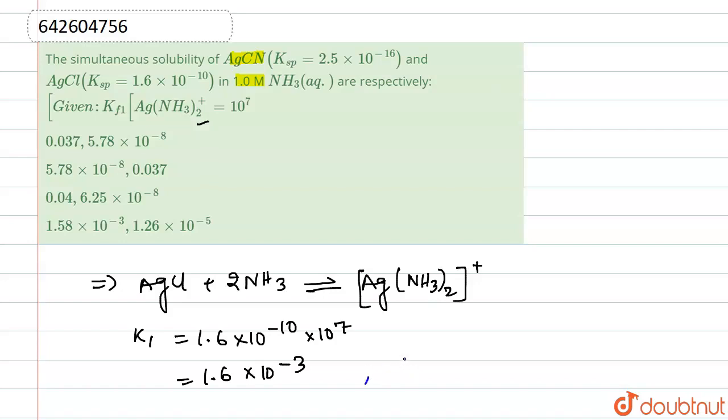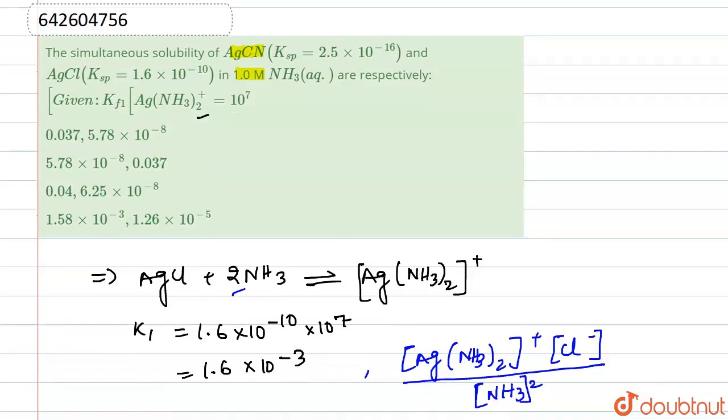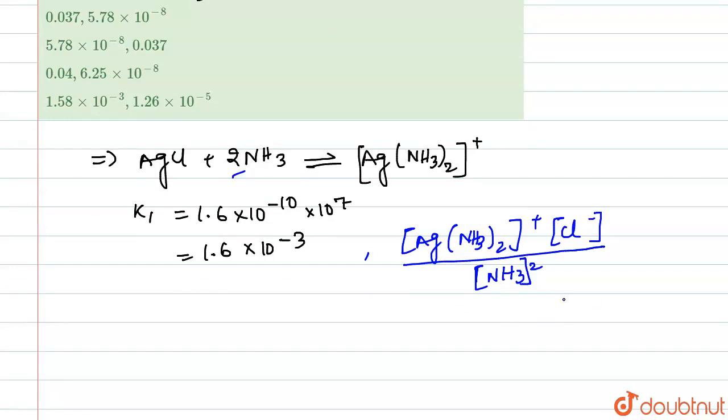We are writing the concentrations. This will be like, this is for [Ag(NH3)2]+ and we have concentration of Cl- divided by [NH3] whole square because there is 2 in its stoichiometry.